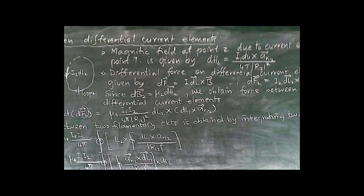The magnetic field at point 2 due to current element at point 1 is given by: dH2 = (i1 dl1 × a_r12) / (4π × |r12|²), where a_r12 represents the unit vector in the direction of r12. This is similar to Coulomb's law derivation, where the denominator contains the square of the magnitude r12 squared of the two differential parts.